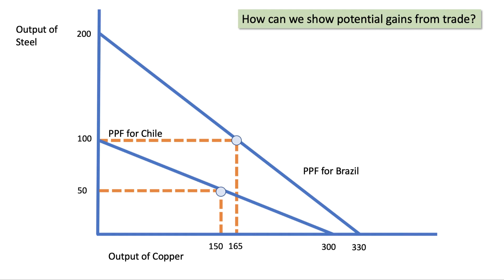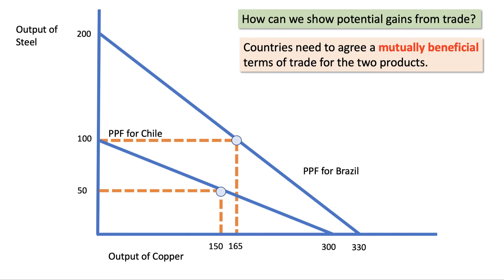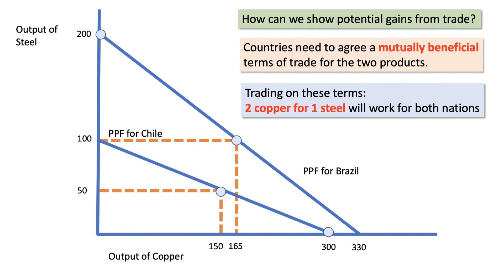So how can we show the potential gains from trade using a PPF diagram? We're starting off in the situation with 50 and 150 for Chile, and 100 and 165 for Brazil. For countries to benefit from specialisation and then exchange, they need to find a mutually beneficial terms of trade for the two products. Mutually beneficial means that both parties benefit, so in this sense trade can be seen as a positive-sum game — both parties potentially stand to benefit, not necessarily equally, but they stand to benefit if they can agree on mutually beneficial terms of trade. Trading two copper for one steel does work and does benefit both nations.